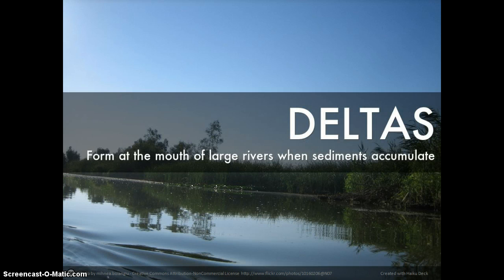Deltas form at the mouth of large rivers, when sediments and silt accumulate rather than being washed away by currents or ocean waves. Over time, a complex set of channels, sand barriers, and marshes form at the mouth of the river. As sediments continue to accumulate, the course of the river may even be changed.